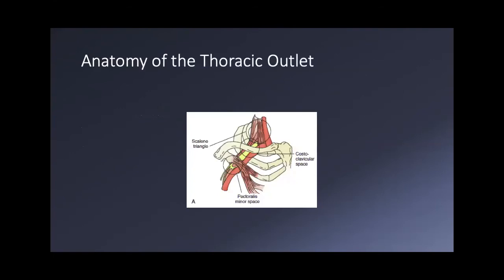The scalene triangle is bordered by the anterior scalene muscle, the middle scalene, and the first rib inferiorly. Running through that triangle are the subclavian artery and the nerves that make up the brachial plexus. The costoclavicular space is another important space — this is where compression actually occurs in thoracic outlet syndrome. The pectoralis minor space is related to pectoralis minor syndrome, which can mimic TOS but has a different anatomic origin.